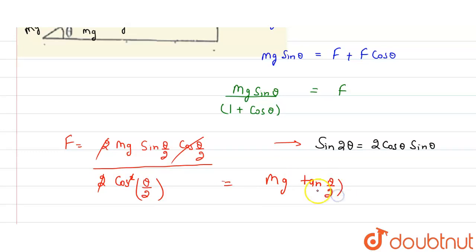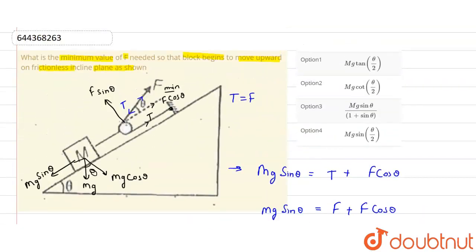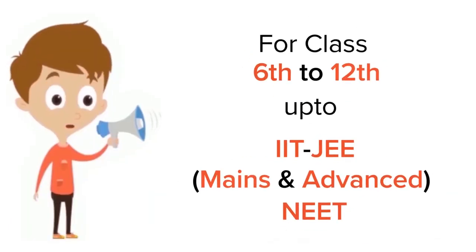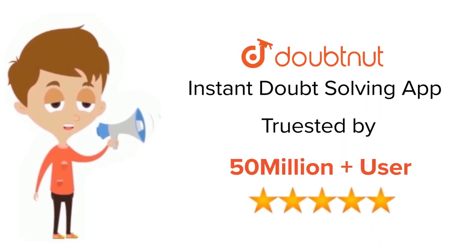So mg tan(theta/2) will be the minimum force which will be required. So mg tan(theta/2), option 1 is the correct option.